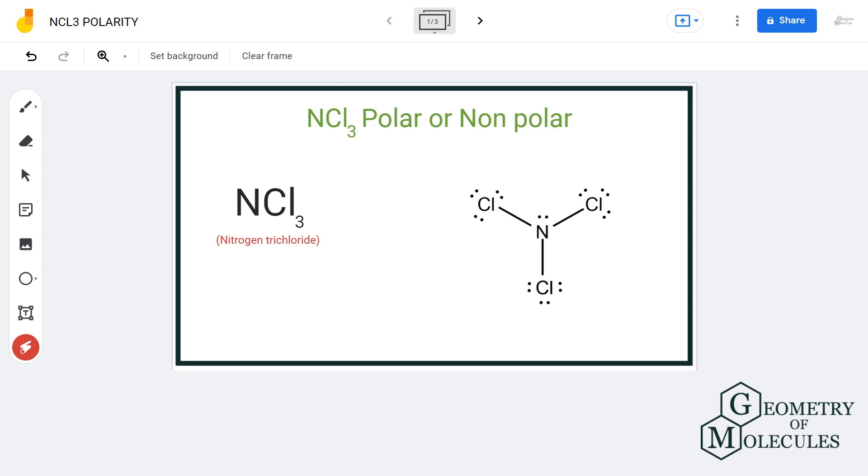So this is the Lewis structure of NCl3, and you can clearly see that central atom nitrogen has formed three sigma bonds with three chlorine atoms and also has one lone pair of electrons on it.